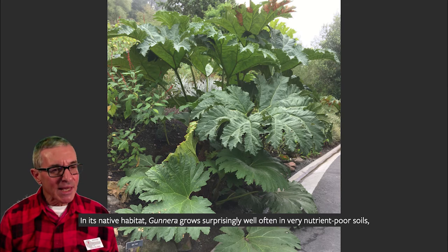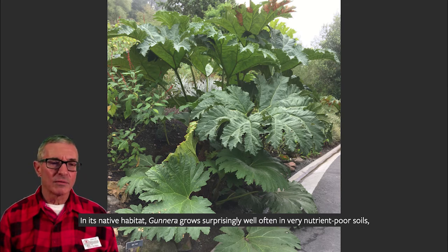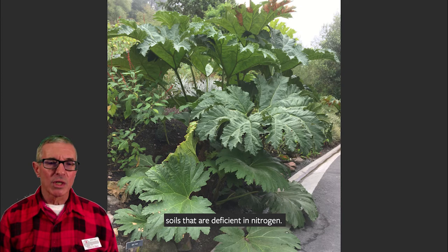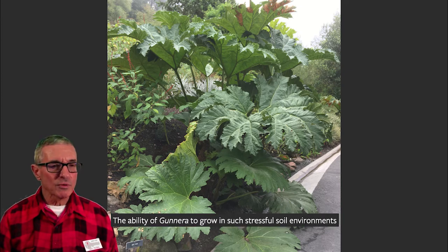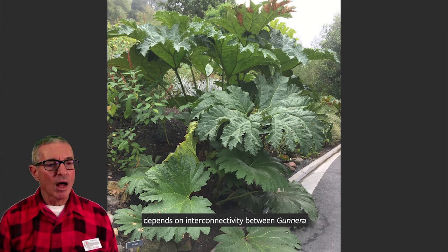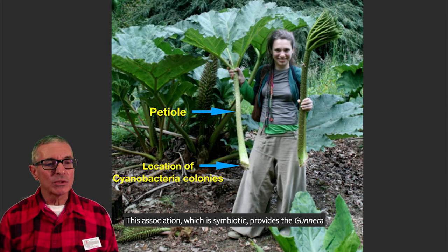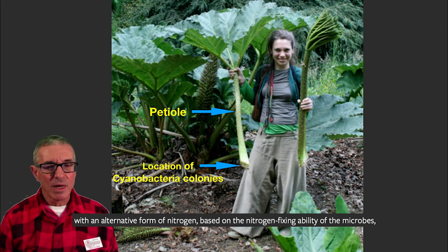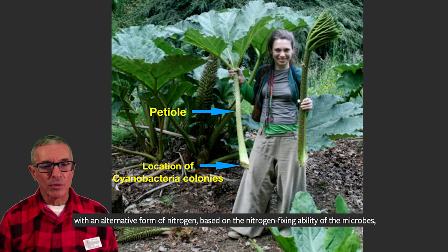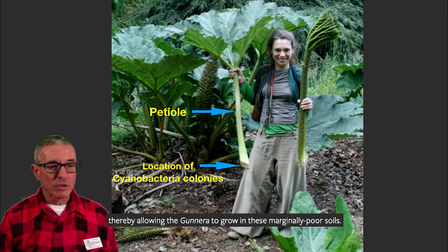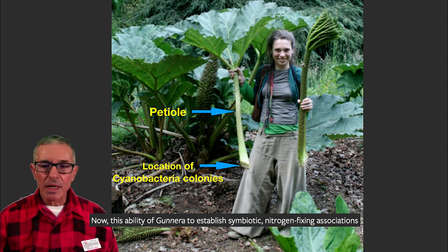In its native habitat, gunnera grows surprisingly well, often in very nutrient-poor soils — soils that are deficient in nitrogen. The ability of gunnera to grow in such stressful soil environments depends on interconnectivity between gunnera and certain microbes known as cyanobacteria. This association, which is symbiotic, provides the gunnera with an alternative form of nitrogen based on the nitrogen-fixing ability of the microbes, thereby allowing the gunnera to grow in these marginally poor soils.